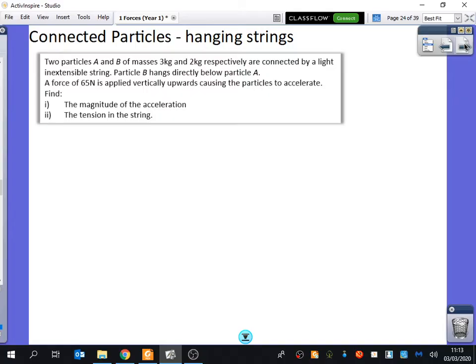Particle B hangs directly below particle A. A force of 65 newtons is applied vertically upwards, causing the particles to accelerate. Find the magnitude of the acceleration and the tension in the string.